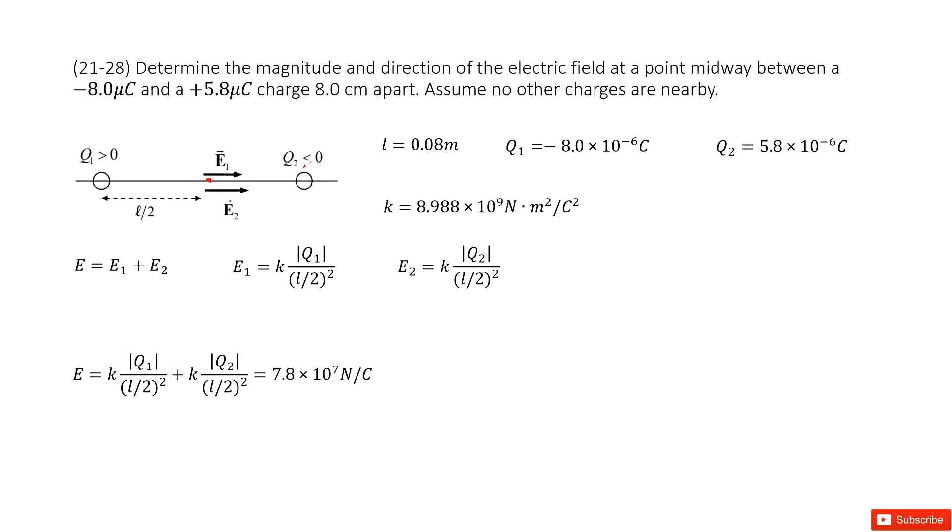Now we look at q2. q2 is a negative charge, so the electric field will move radially inward. In the x-direction, it's pointing to the positive x-direction. So in this way, we determine the directions of E1 and E2.